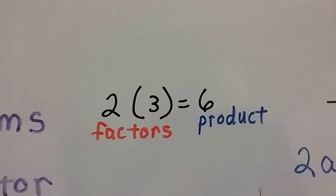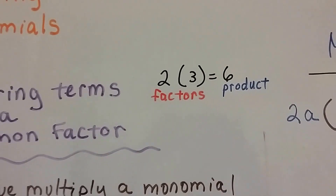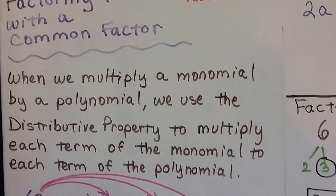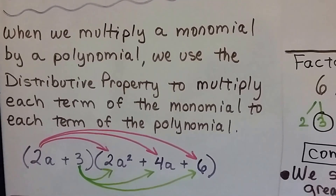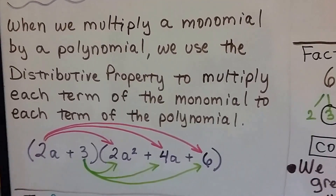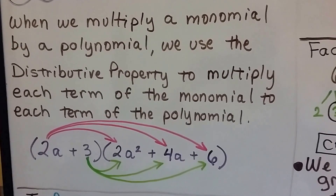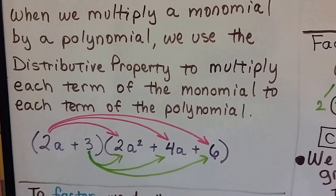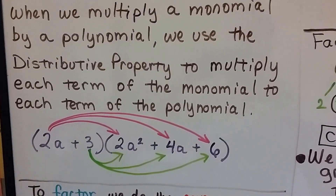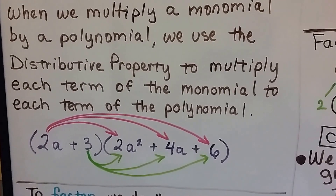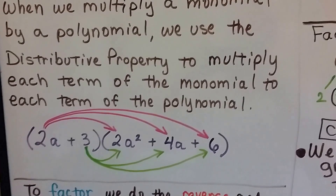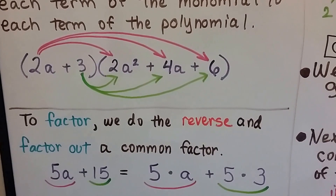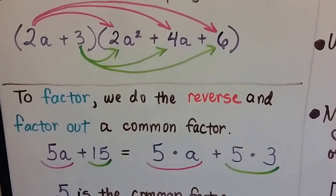2 and 3 would be factors, and 6 would be the product. So we're going to factor out. When we multiply a monomial by a polynomial, we use the distributive property to multiply each term of the monomial to each term of the polynomial. To factor, we do the reverse — it's the reverse of the distributive property — and factor out a common factor.